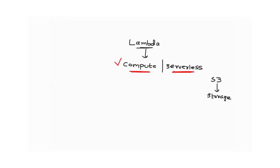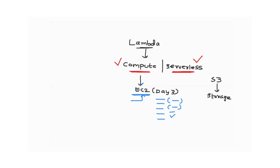Lambda has two primary characteristics — it belongs to the same family as EC2, which also solves the problem of compute. Previously in on-premises data centers, people created their own servers. When they moved to AWS, there is EC2: you provide parameters like AMI, instance type (memory and CPU), and security settings, and AWS gives you an EC2 instance — a virtual compute or virtual server.